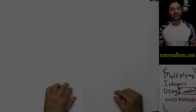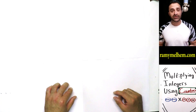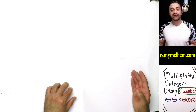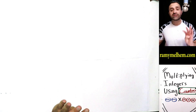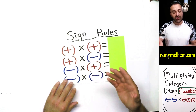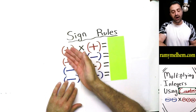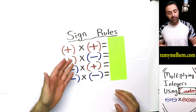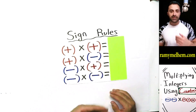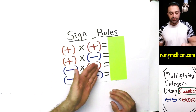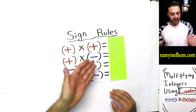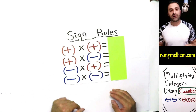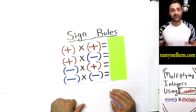Today we're going to be looking at how to multiply integers, which are positive and negative numbers. We're going to focus on four different cases: how to multiply a positive with another positive, a positive multiplied by a negative, a negative multiplied by a positive, and a negative multiplied by another negative number.